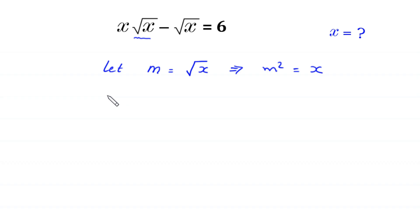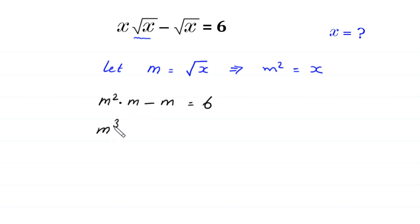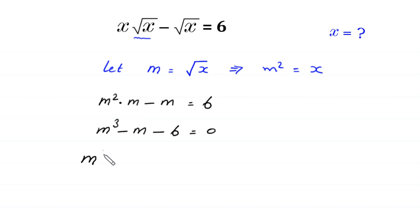The equation becomes m squared times m minus m is equal to 6. Now m squared times m gives m cubed, minus m. We move the 6 to the left side so it becomes negative 6, giving us m cubed minus m minus 6 is equal to 0.